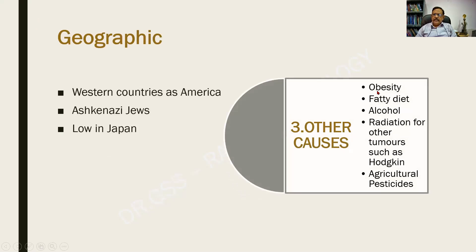The third subheading covers other causes, which are not of great importance but should be included in answers: obesity, fatty diet, alcohol intake, and radiation. Paradoxically, a patient already having a tumor such as Hodgkin's lymphoma who undergoes radiotherapy may develop carcinoma of the breast. Agricultural pesticides in crops, consumed by cattle whose milk is then consumed by women, may also be a contributing factor. Geographically, breast cancer is common in America and among Jewish populations, and low in countries such as Japan.